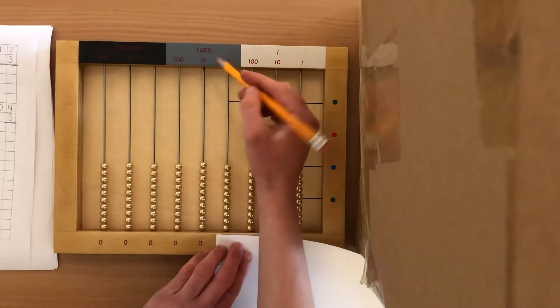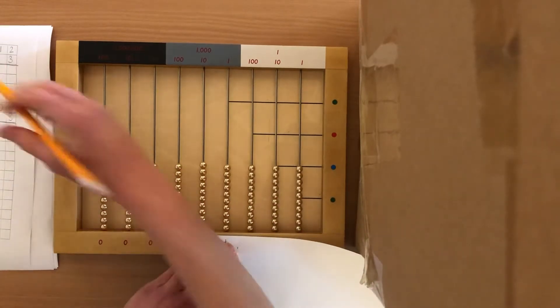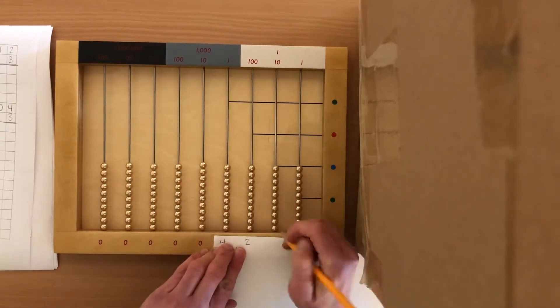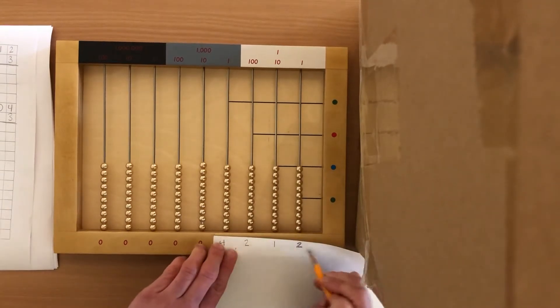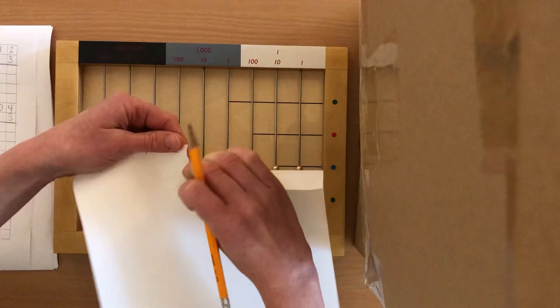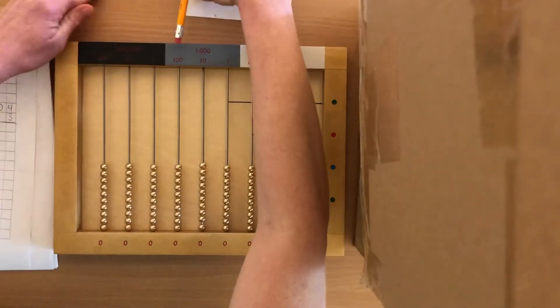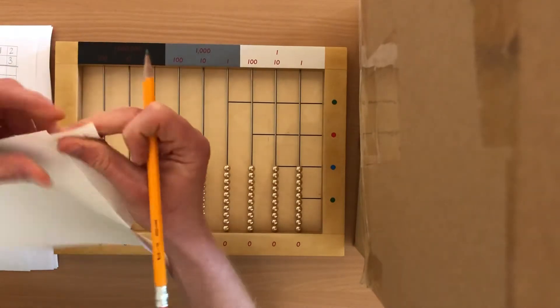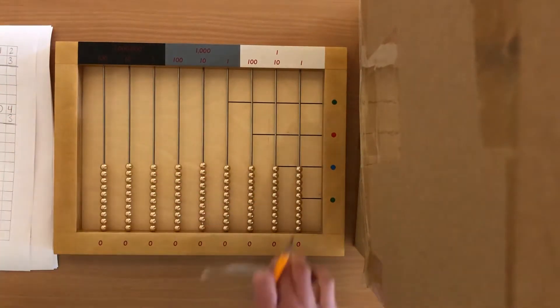So I'm gonna go to the thousands, 4,200, and 110, two units, so 4,212. I'm gonna rip this. So when I rip this, it's gonna stay on the bead frame so I remember my number.